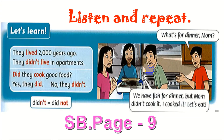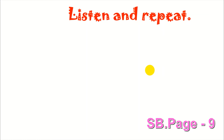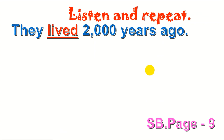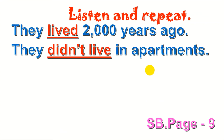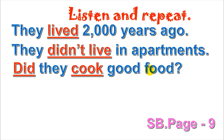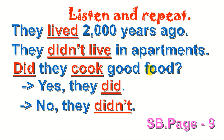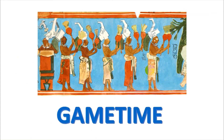Okay, very good. After watching the video, let's open your student book, page 9, Listening 6 – listen and repeat. They lived two thousand years ago. They didn't live in apartments. Did they cook good food? Yes, they did. No, they didn't.